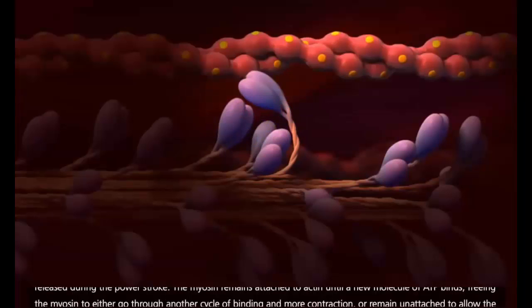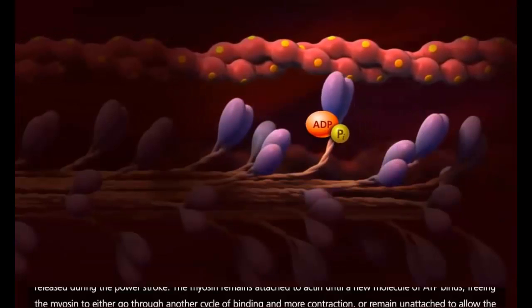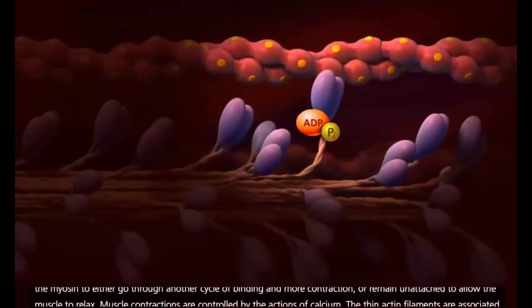The myosin remains attached to actin until a new molecule of ATP binds, freeing the myosin to either go through another cycle of binding and more contraction, or remain unattached to allow the muscle to relax.